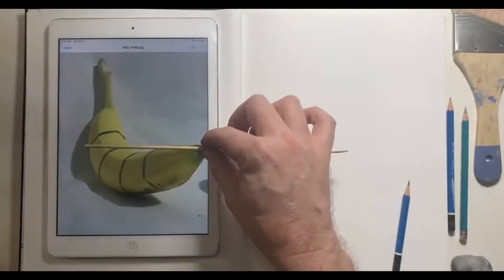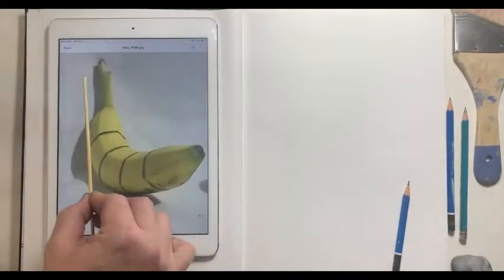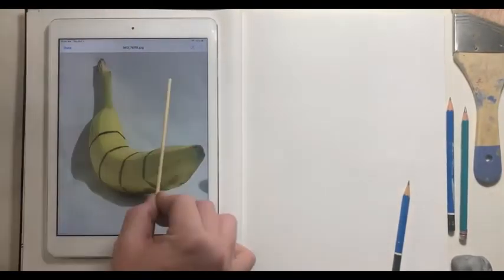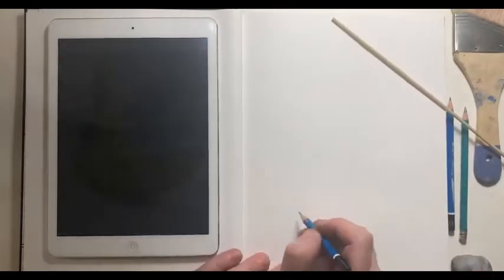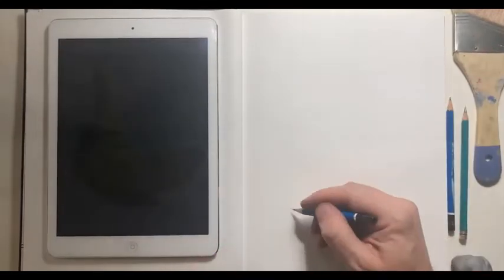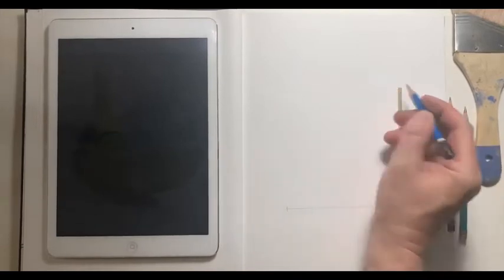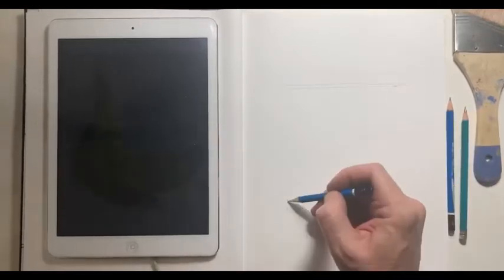The first thing I'm going to do is check the relative height to width proportion of the object. I'm using a little teriyaki skewer, which for me is a little more accurate than the pencil since it's thinner, but a pencil is just fine.